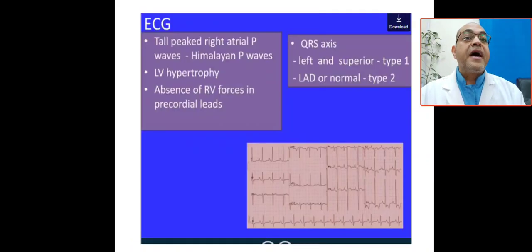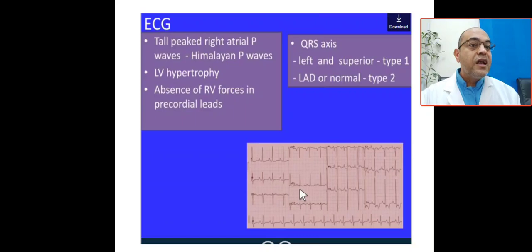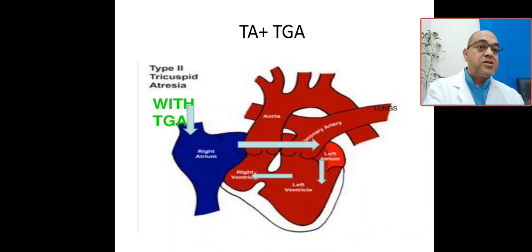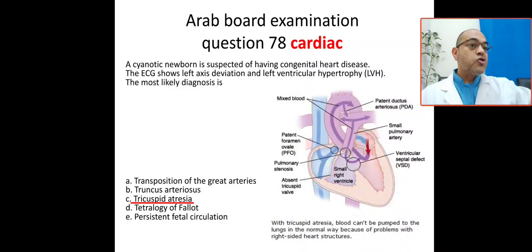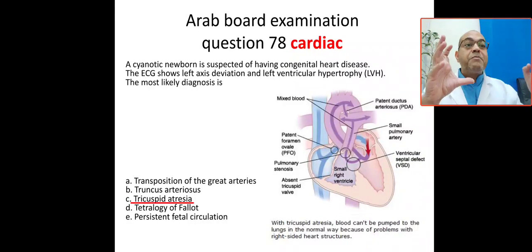The ECG in tricuspid atresia shows left axis deviation — visible in lead II — and left ventricular predominance with absent right ventricular forces. There are two types of tricuspid atresia: tricuspid atresia associated with TGA, and tricuspid atresia associated with pulmonary stenosis. The key clue remains: cyanosis with left axis deviation and left ventricular hypertrophy equals tricuspid atresia.